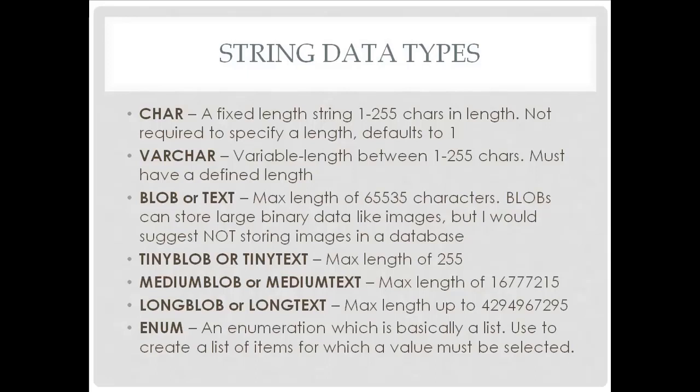Next we have text or blob. You would use text for something like a blog post — something where you're going to have a lot of data. For instance, in WordPress, that big editor body area would usually go into a text field. It has a max length of 65,535 characters.